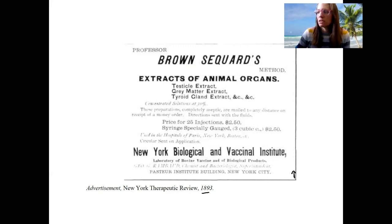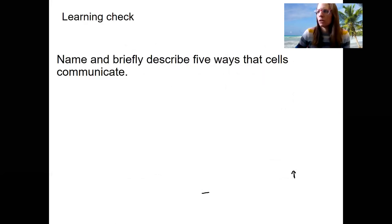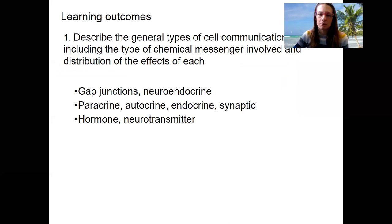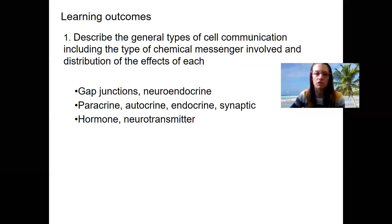So what we've done here is name and describe. Oh, I'm sorry. Actually, I want you to do a learning check here. I want you to name and briefly describe at least five ways that cells communicate. So do this in your homework. And what we've done is describe the type of cell communication and the type of chemical messenger involved in the distribution of the effects of each one.